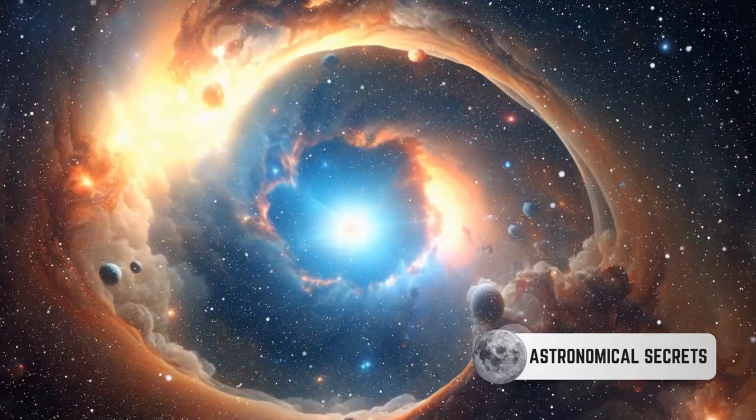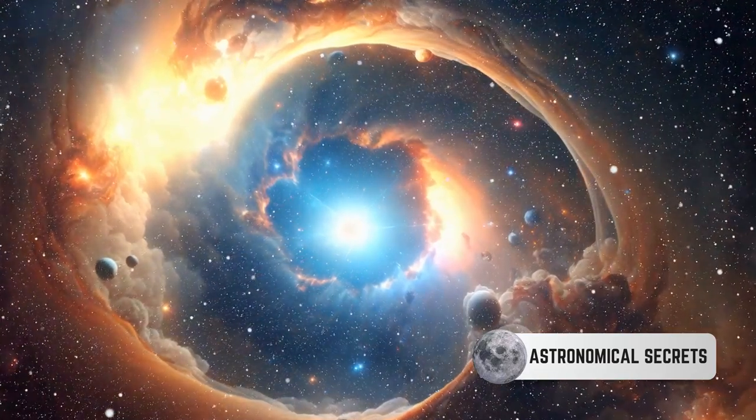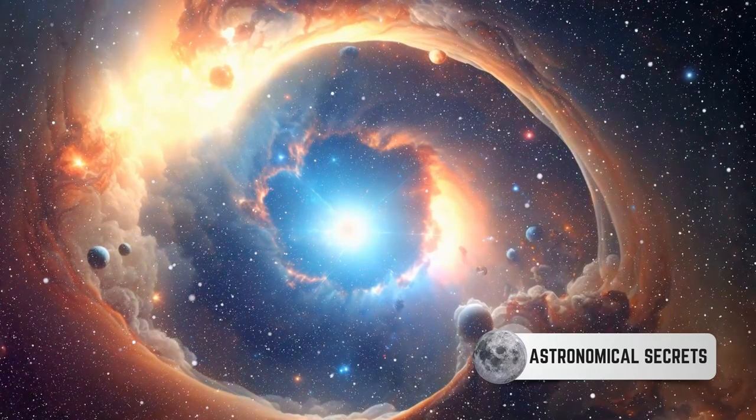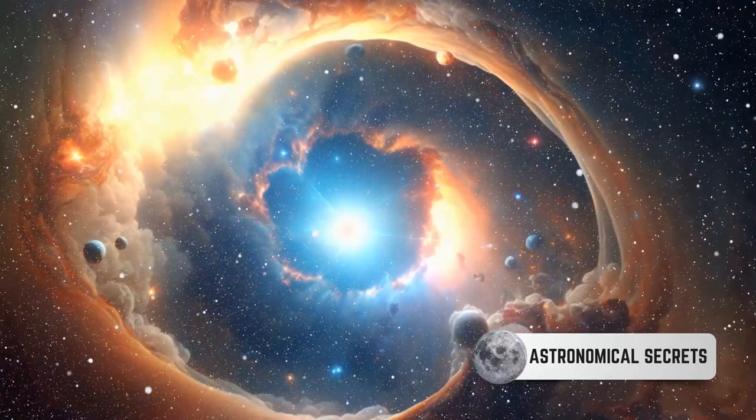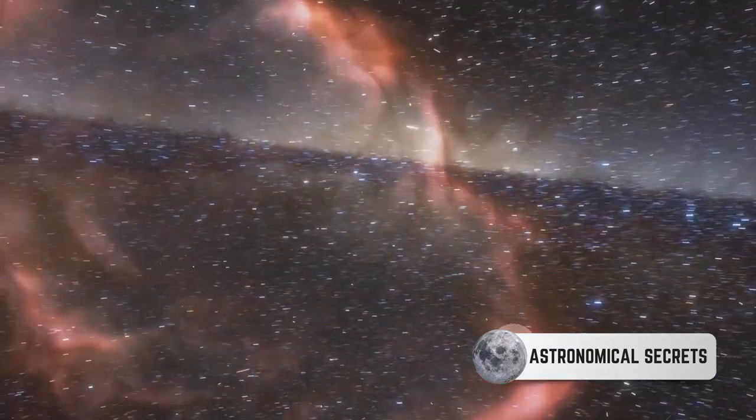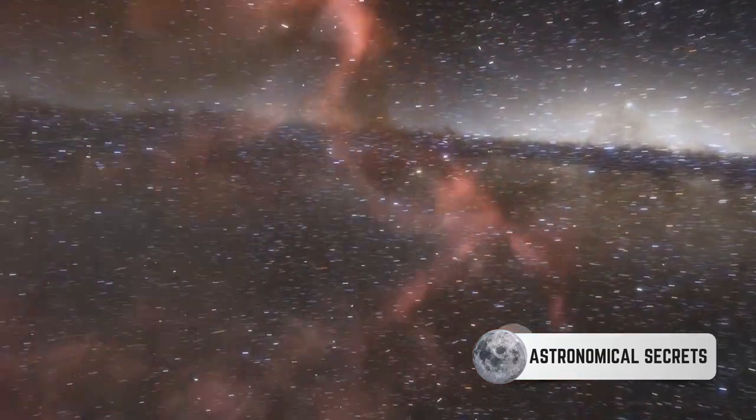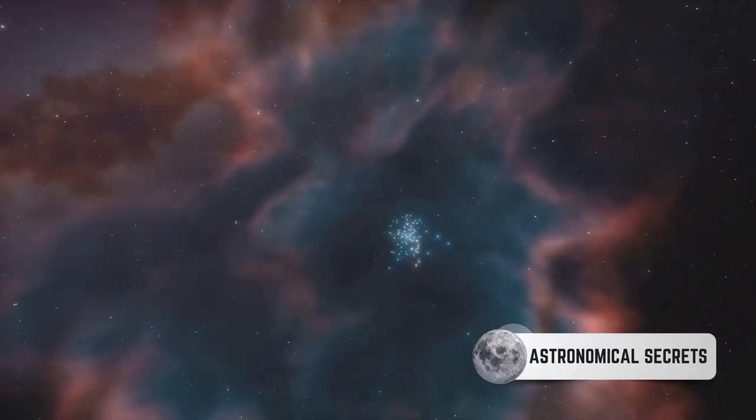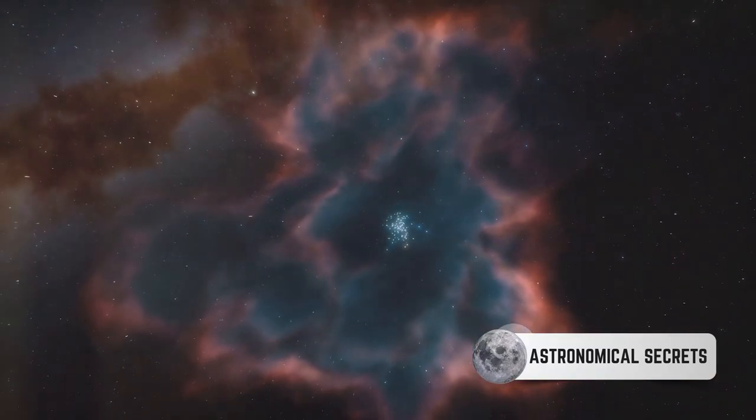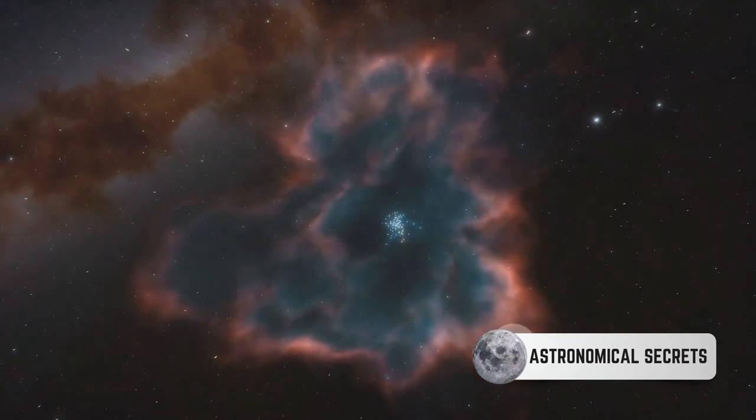But how are these regions formed? Well, it all starts with a giant molecular cloud, a cold, dense region of space filled with gas and dust. When a part of this cloud collapses under its own gravity, a hot core forms, giving birth to a new star. This star, in its infancy, emits a colossal amount of energy in the form of ultraviolet light. This light is so powerful that it ionizes the surrounding hydrogen, transforming the quiet molecular cloud into a glowing HII region.